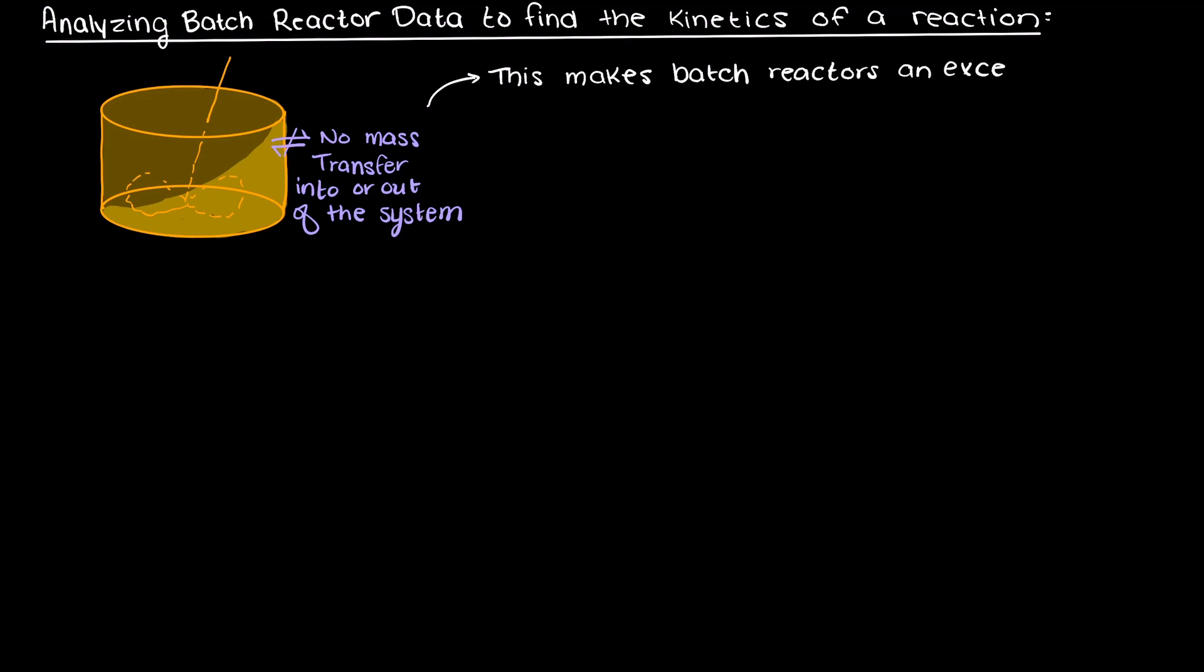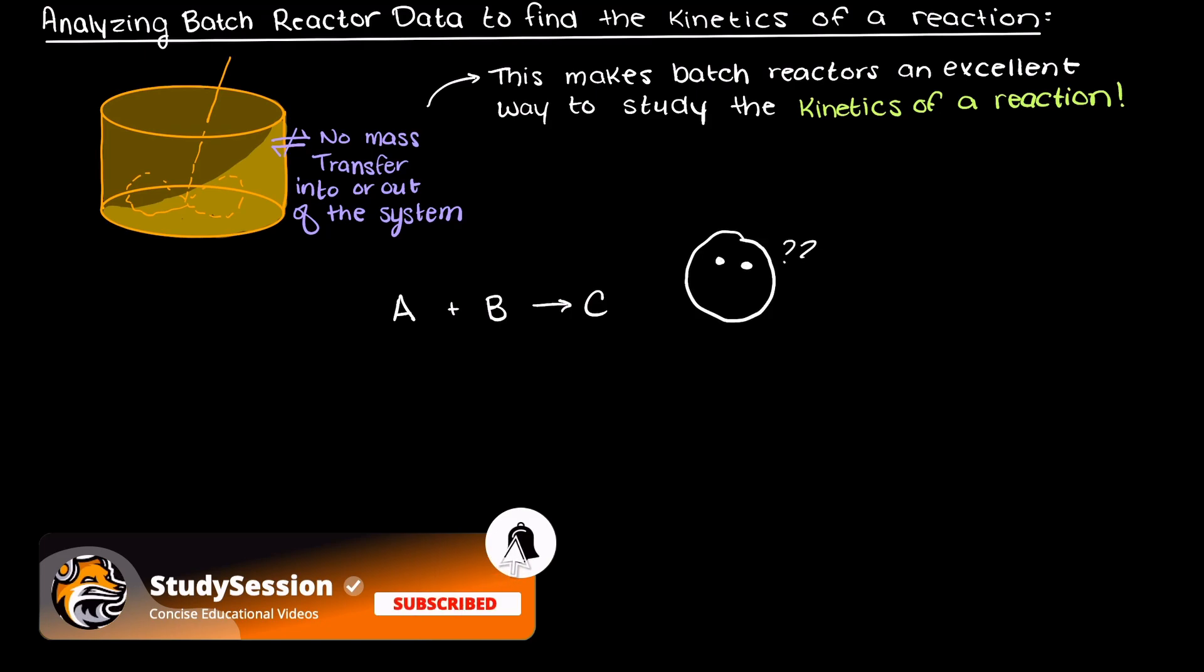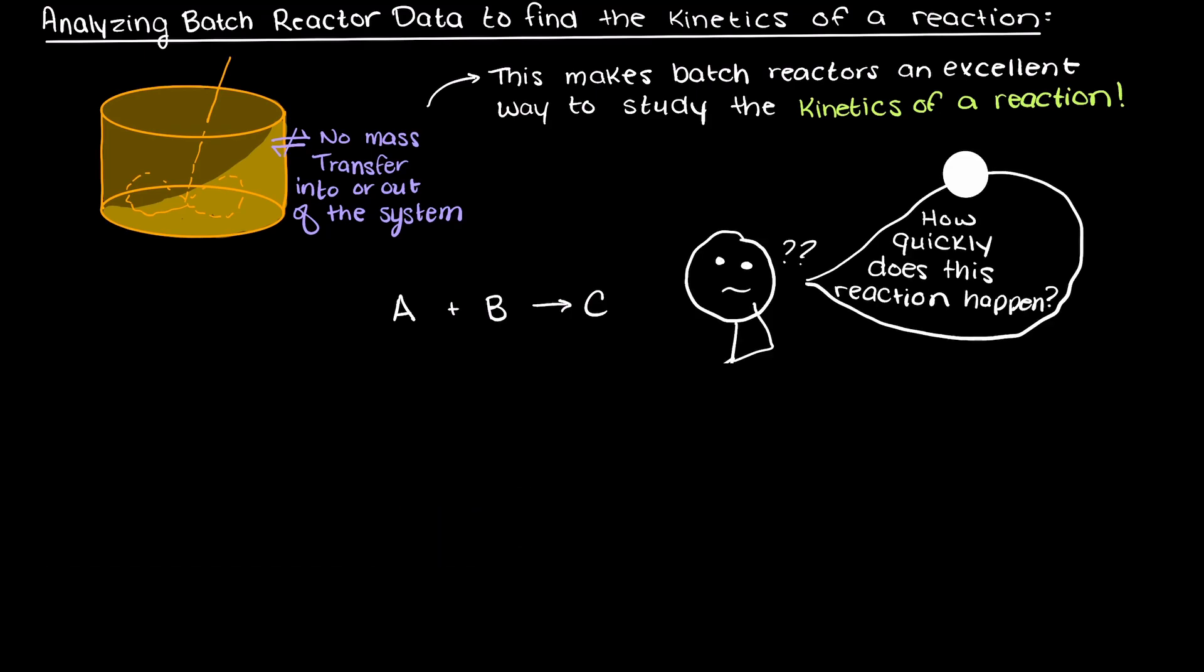Therefore, batch reactors are excellent at allowing us to study the rate at which a given reaction occurs. So, let's imagine that we have this reaction, A plus B turns into C, but we are unsure how quickly this reaction occurs, which is important to know if we are going to be working with this reaction.